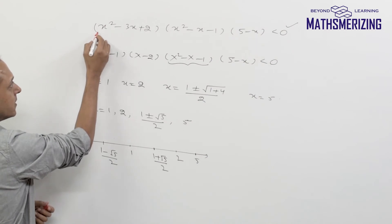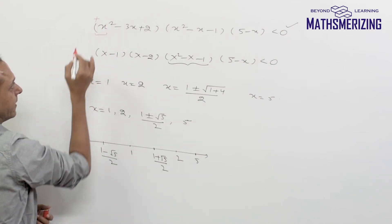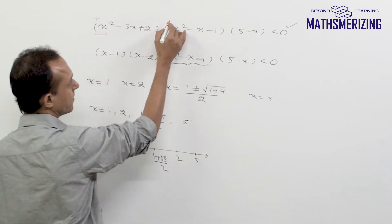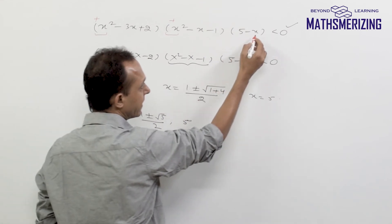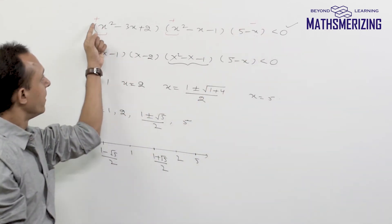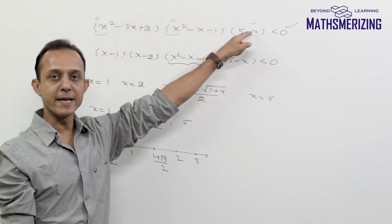So what is the sign of the leading coefficient in the first expression? It is positive. Sign of the leading coefficient in second? It's again positive. But here the sign of the leading coefficient is negative. So this is plus, plus, and minus. Plus into plus into minus is actually minus.